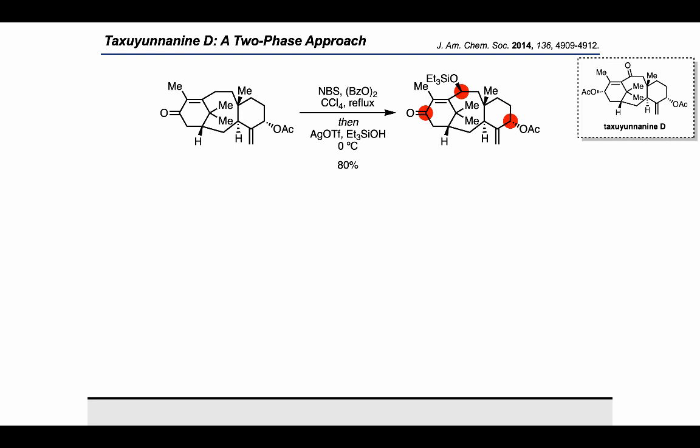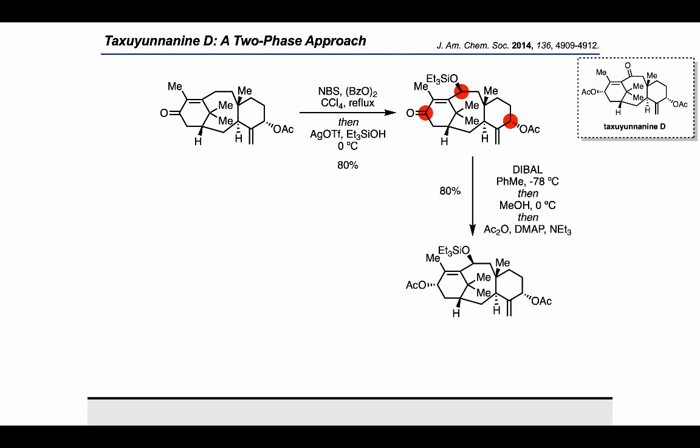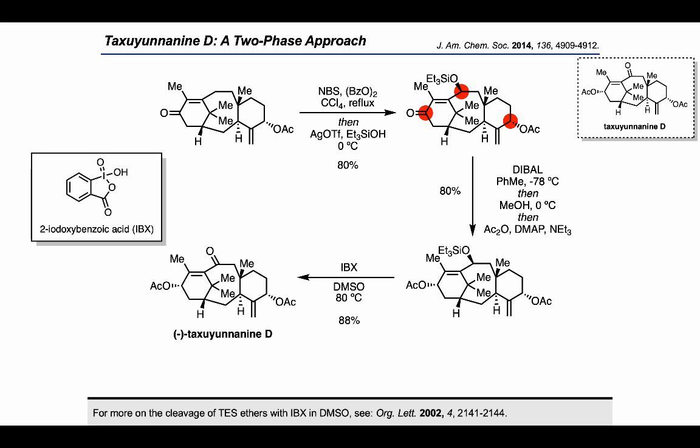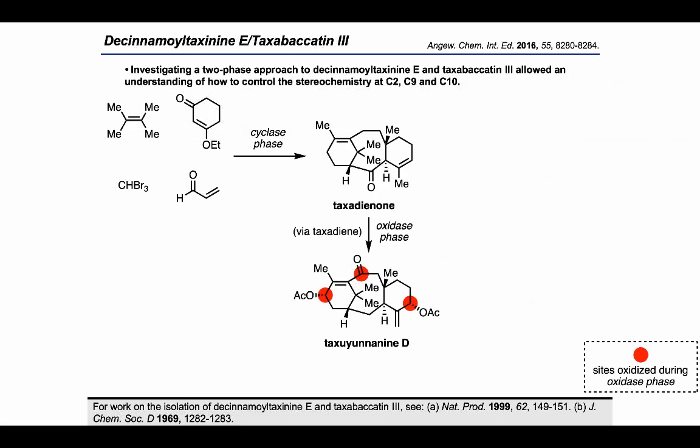To finish the synthesis, DIBAL was used to reduce the ketone to an alcohol, which could be converted to the acetate with acetic anhydride. Finally, using IBX and DMSO, it was possible to simultaneously remove the TES group and oxidize the newly generated free alcohol up to the ketone, completing the synthesis of taxaunanine D. Having demonstrated that it's possible to develop a cyclase phase to a tricyclic intermediate which could be used to access taxaunanine D via taxadiene, the Baran group started to look at even more challenging targets.